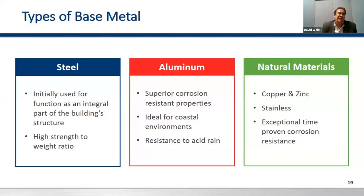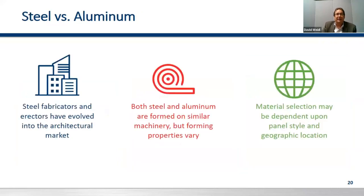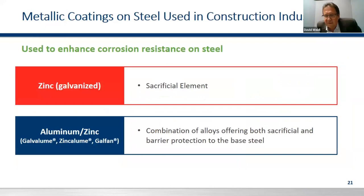With metal, you've got base metals: steel, which was initially used for function and has a high strength-to-weight ratio; aluminum, which has superior corrosion resistance and is fantastic for coastal environments and acid rain areas; and natural metals — copper, zinc, and stainless — which have been exceptional and time-proven but cost roughly two to three times more. We'll concentrate on steel and aluminum today. Your copper and zinc are formed similarly, but installation requires specific attention we can cover in another seminar.